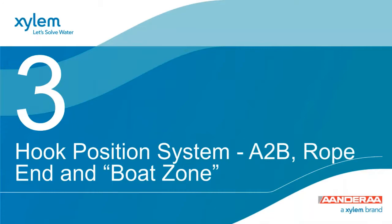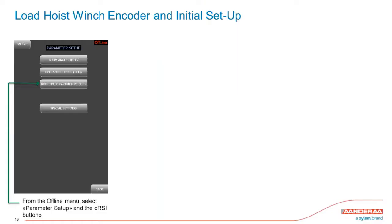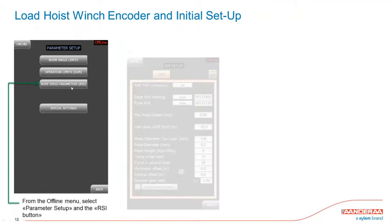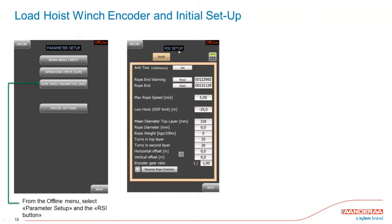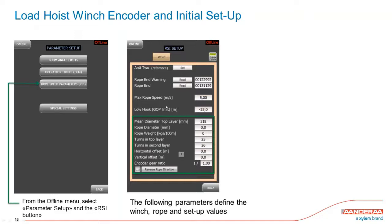We'll now go to the hook position system, which also sets up the A2B anti-two-block position, the rope end limit, and together with the OLM, defines a boat zone. Going offline, we go to Rope Speed Parameters RSI — more precisely, the hook position. Operating the push button takes us into the RSI setup. The setup is more comprehensive than the OLM, but again it is only done once and you can forget about it afterwards. All the numbers relate to defining the winch, the rope, and setup values.